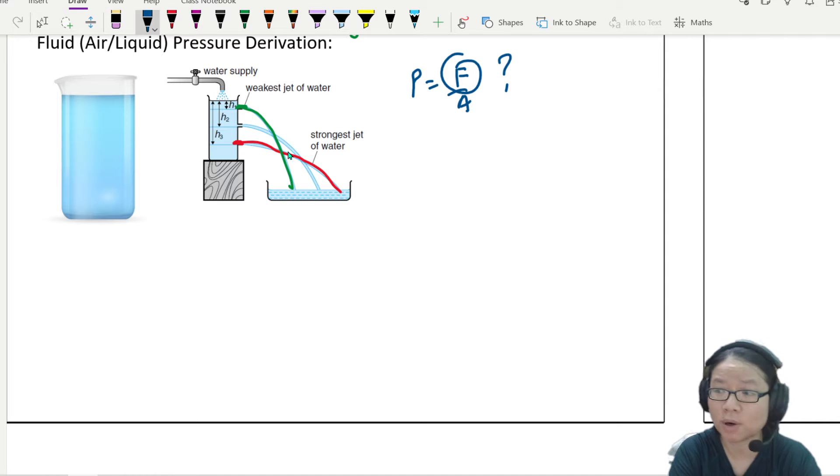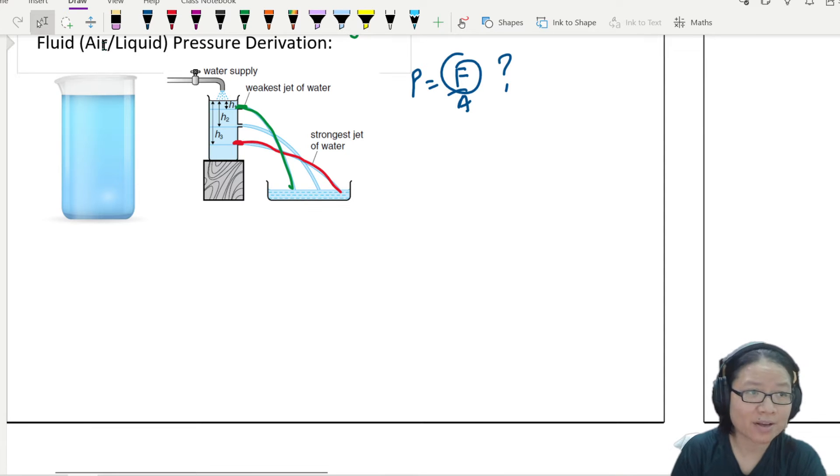Compared to water coming from the highest hole. And I asked you to think about what are the actual forces in our P equals F over A equation. What is this force that causes the water to be pushed out from the surface? So in this video, we are going to talk about what this force is and then derive an equation for air or liquid pressure.